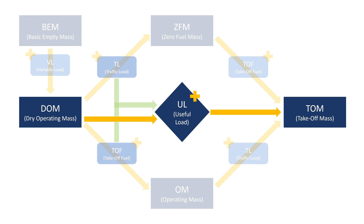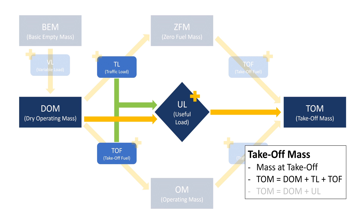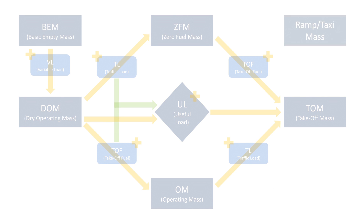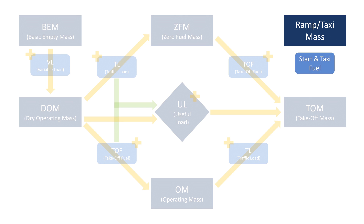There are multiple ways to find the takeoff mass, and here's one more. The ramp or taxi mass is the mass of the aircraft at the ramp or gate, so before starting taxi. Removing the taxi fuel from it once again gives you the mass at takeoff.